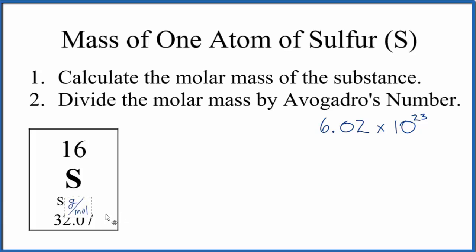We take this atomic mass here, the average atomic mass, and you can think of the units as grams per mole. So we have 32.07 grams per mole. We're going to multiply this by a conversion factor.